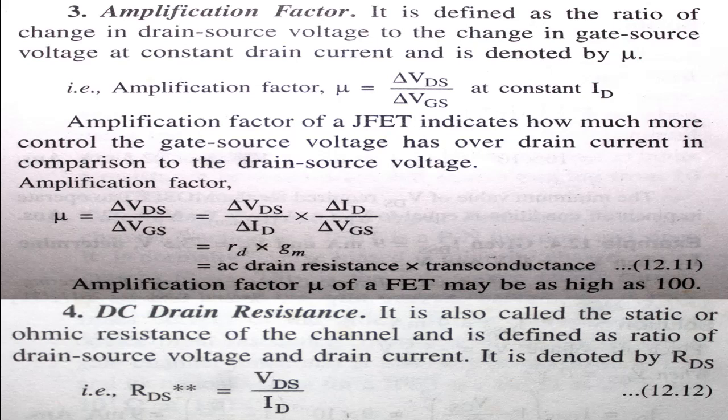These are the four J-FET parameters. AC drain resistance is the ratio of change in VDS to change in ID at constant VGS. Transconductance is the change in ID to change in VGS at constant VDS. Amplification factor is the change in VDS at constant ID. DC drain resistance is the ratio of VDS to ID.